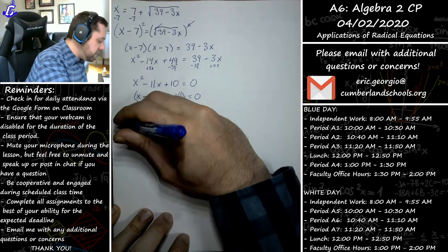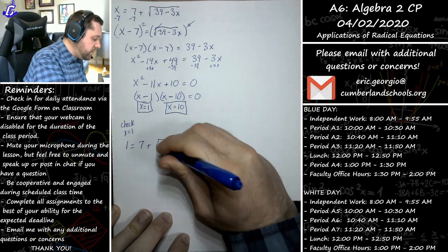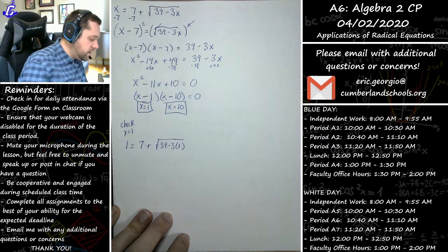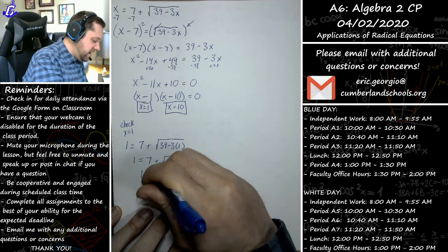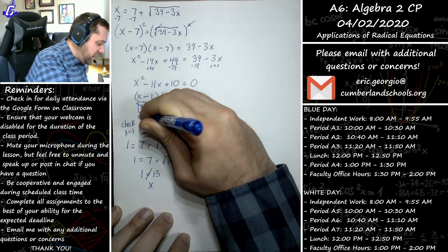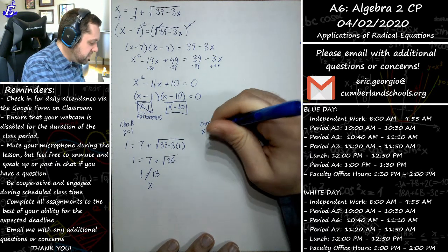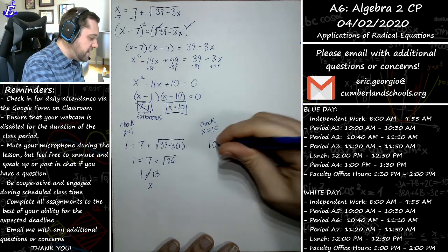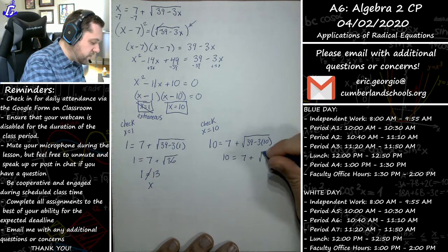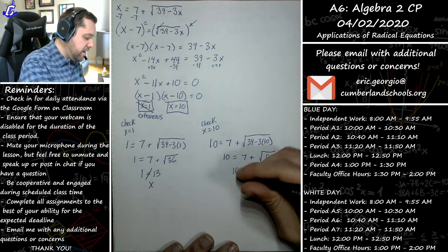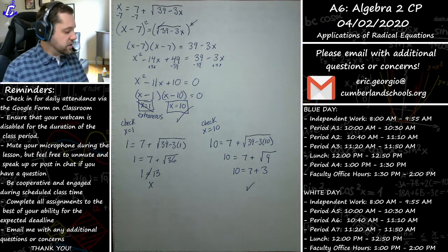Checking x equals 1 in the original equation: is 1 equal to 7 plus √(39 minus 3)? That's 7 plus √36, which is 7 plus 6, which is 13 — clearly not equal to 1, so x equals 1 is extraneous. Checking x equals 10: is 10 equal to 7 plus √(39 minus 30)? That's 7 plus √9, which is 7 plus 3 equals 10 — true! So x equals 10 is the one real solution.